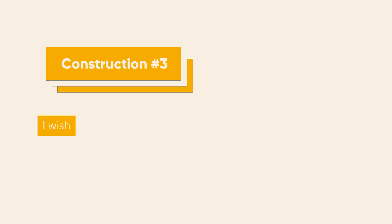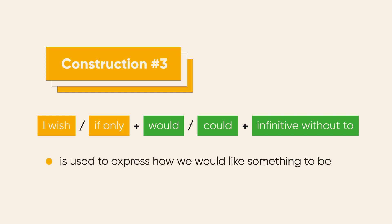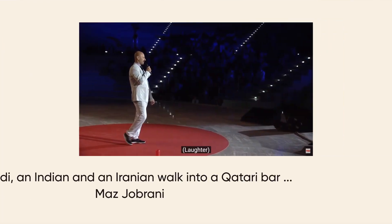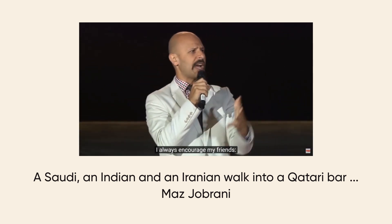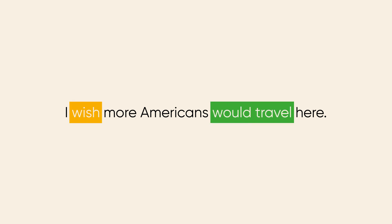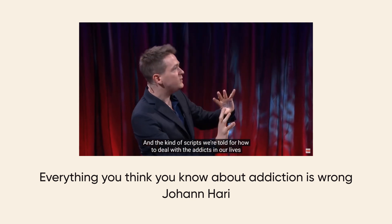Construction number three: I wish or if only plus would or could plus infinitive without to. We may express regret not only about present or past, but sometimes about the future or things we can't control, showing a contrast between how things are and how we would like them to be. For example: I wish more Americans would travel here. Pay attention that we don't say will travel, even if it's said about the future. We also use this construction to talk about something annoying somebody is doing that we would like to change — like: I wish someone would just stop you. Would expresses willingness; could expresses ability.